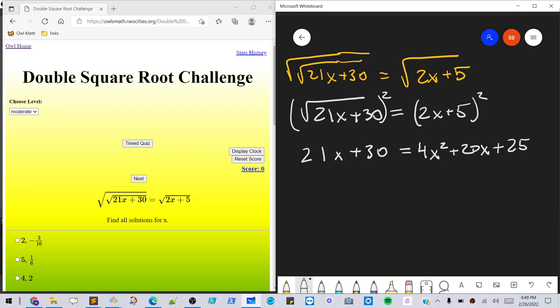Okay, and then for the next step, what we want to do is we want to get everything on one side, so we're gonna get this into a quadratic. So we'll have 4x squared minus x minus 5, yeah, that's right. Okay, and now we just need to factor that.